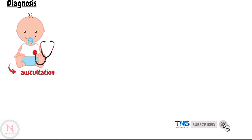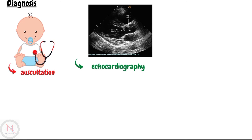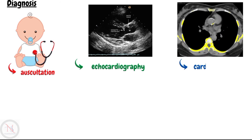Regarding diagnosis, it includes auscultation of heart sounds to listen for the systolic ejection murmur, which may or may not be present in aortic stenosis. Echocardiography will show the abnormal aortic valve and can measure the tightness of the valve. Cardiac CT scan helps measure the size of the aorta and provides details about the aortic valve.